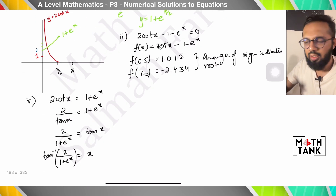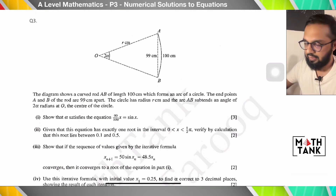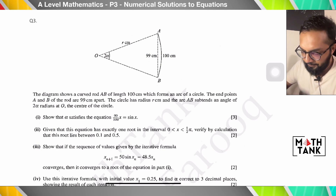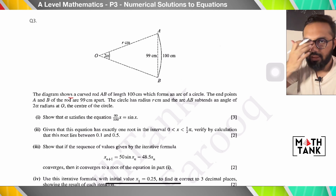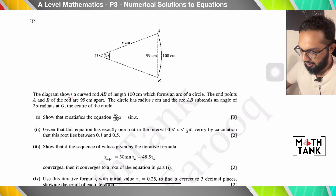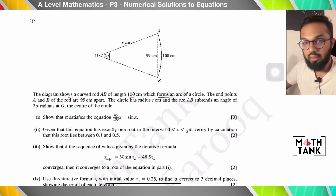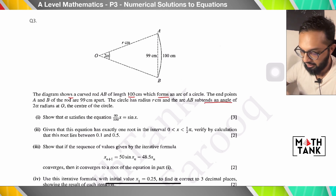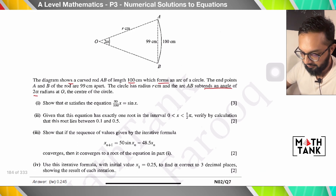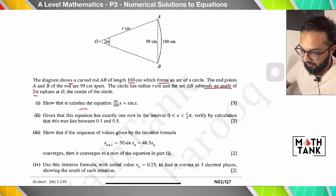Question 3: The diagram shows a curved rod AB of length 100 cm which forms an arc of a circle. The endpoints A and B are 99 cm apart. The circle has radius r and arc AB subtends an angle of 2α radians at center O. Show that α satisfies a given equation. If the iterative process isn't working for you on a particular question, ask in the comments.